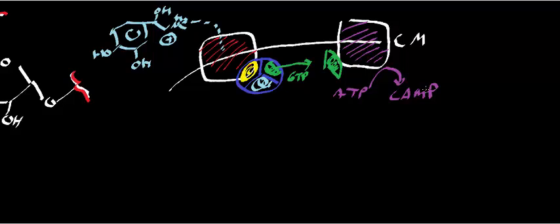So eventually what you're going to have is you're going to have a lot of cyclic AMP that accumulates, and the cyclic AMP that accumulates activates protein kinase A.